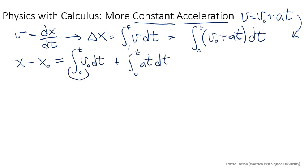Now the initial velocity is a constant, whereas the velocity before was not a constant, so we pull that out of the integral and we just get V₀ times the integral of dt, which is just t, plus...